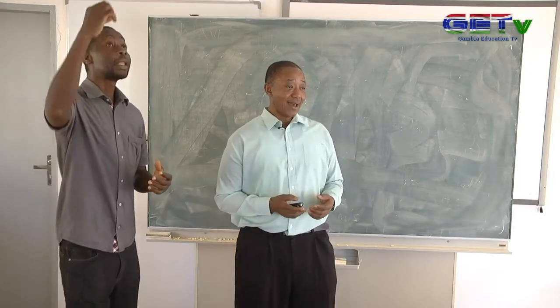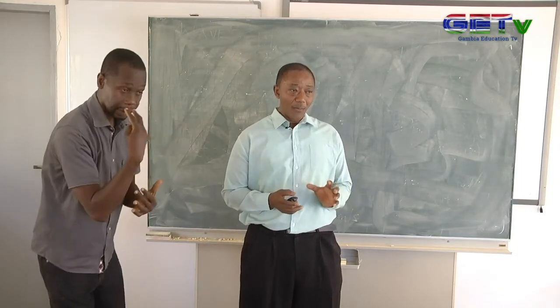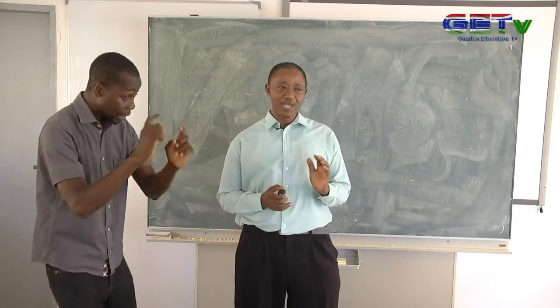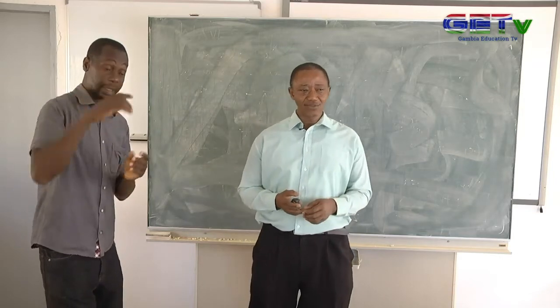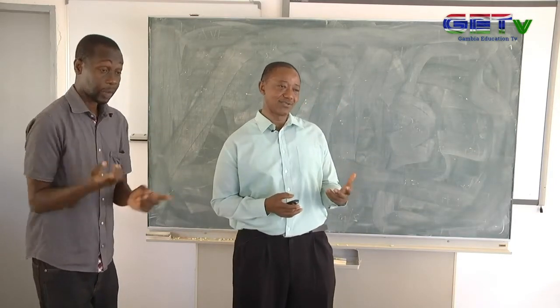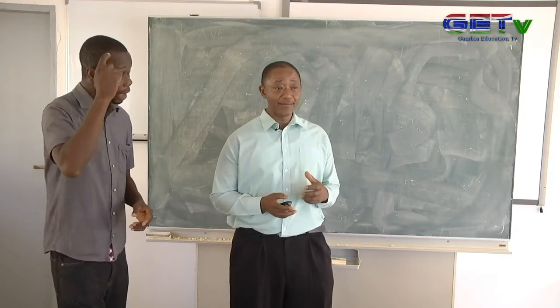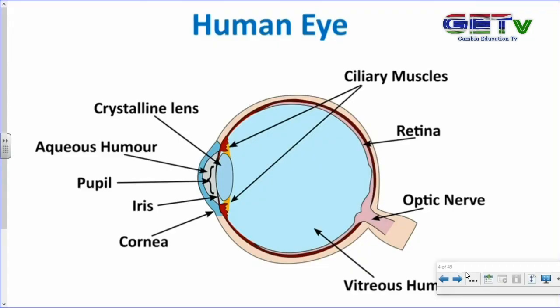The pupil is where light passes. The shape of the eyeball is maintained by two types of liquids. At the front you have the aqueous humor, which is more liquid, and then in the bigger ball it is made up of a gel that we refer to as the vitreous humor. When light comes into the eye, it is the retina that captures the light and converts it into signals which the brain can understand. These signals are passed through the optic nerve.